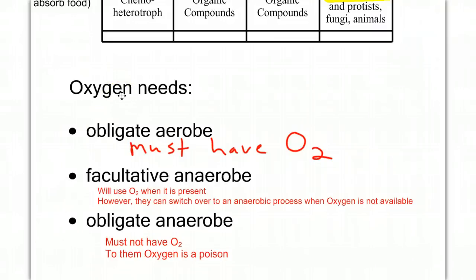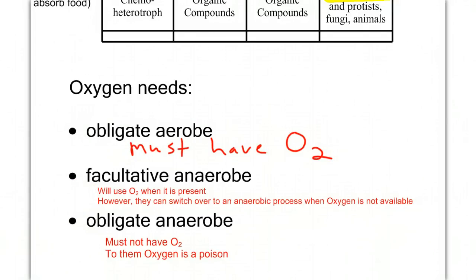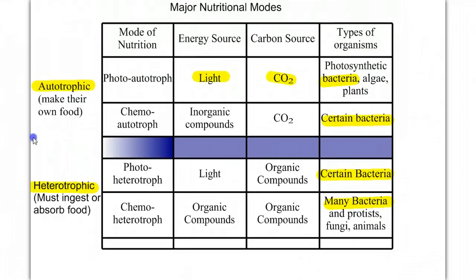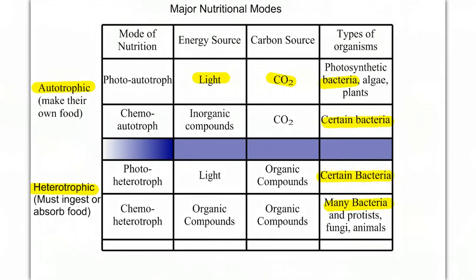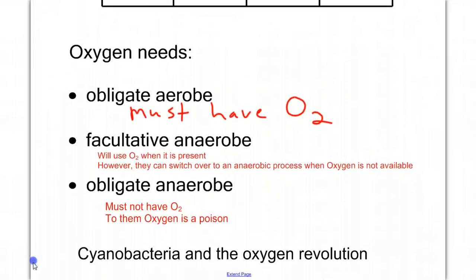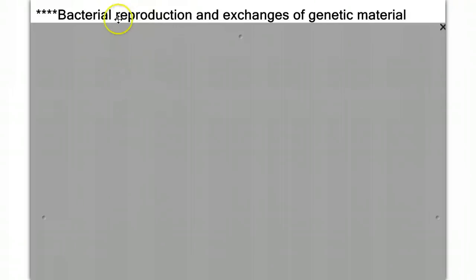We don't see this oxygen diversity with other kingdoms — plants, animals, and fungi must have oxygen. The reason for all this diversity in bacteria is that they've been on the planet long enough to diversify and adapt to all different types of conditions. In the second part of the video, we're going to talk about bacterial reproduction and exchanges of genetic material — how bacteria make more bacteria and how they can change genetically over time.